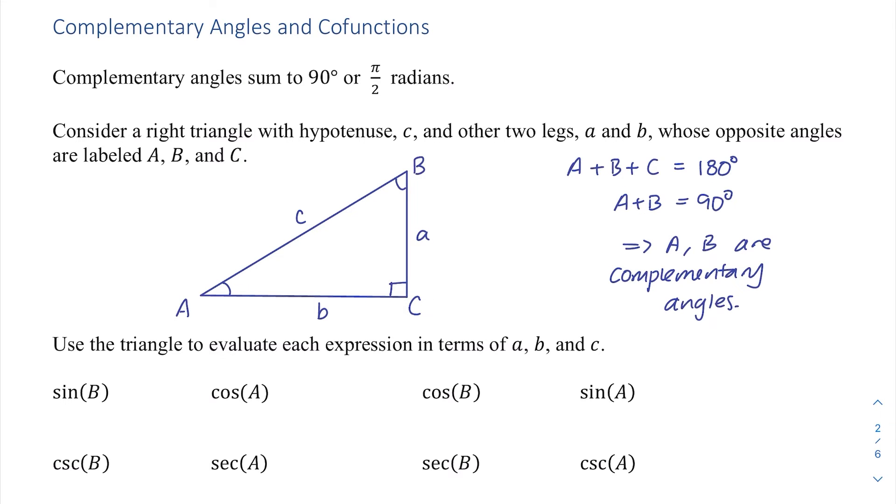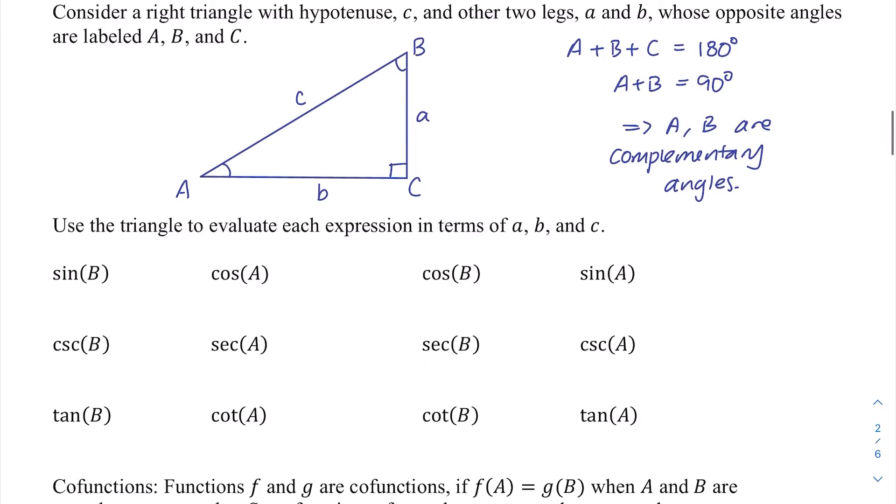Let's use the triangle to evaluate each expression in terms of A, B, and C. We don't have numbers here, but we can still see what they would be in terms of the side lengths. For this, we're going to need SOHCAHTOA because we are doing right triangle trigonometry.